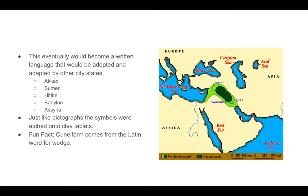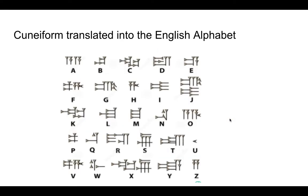Some of these civilizations were the kingdoms of Akkad, Sumer, Hittite, Babylon, and Assyria, all located within the Fertile Crescent in ancient Mesopotamia. Just like pictographs, the symbols were etched onto clay tablets using reed styluses to imprint the clay. A fun fact: cuneiform is actually a word that comes from Latin, meaning 'wedge,' since cuneiform used wedge-shaped symbols to create words.